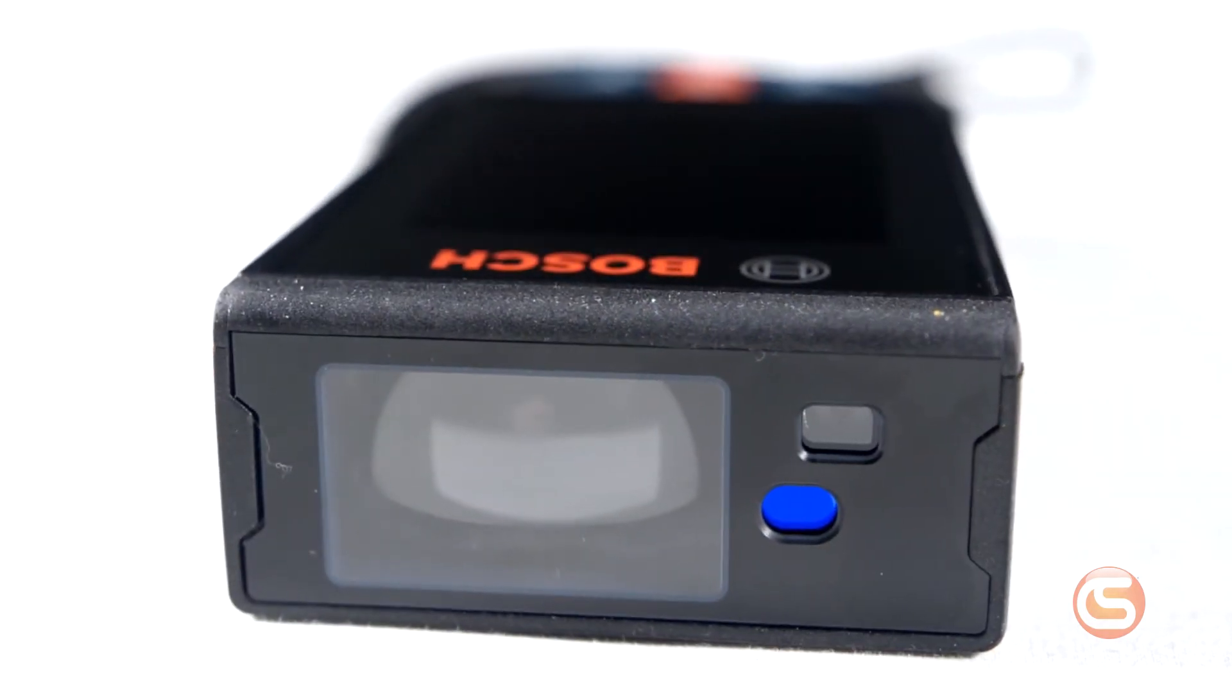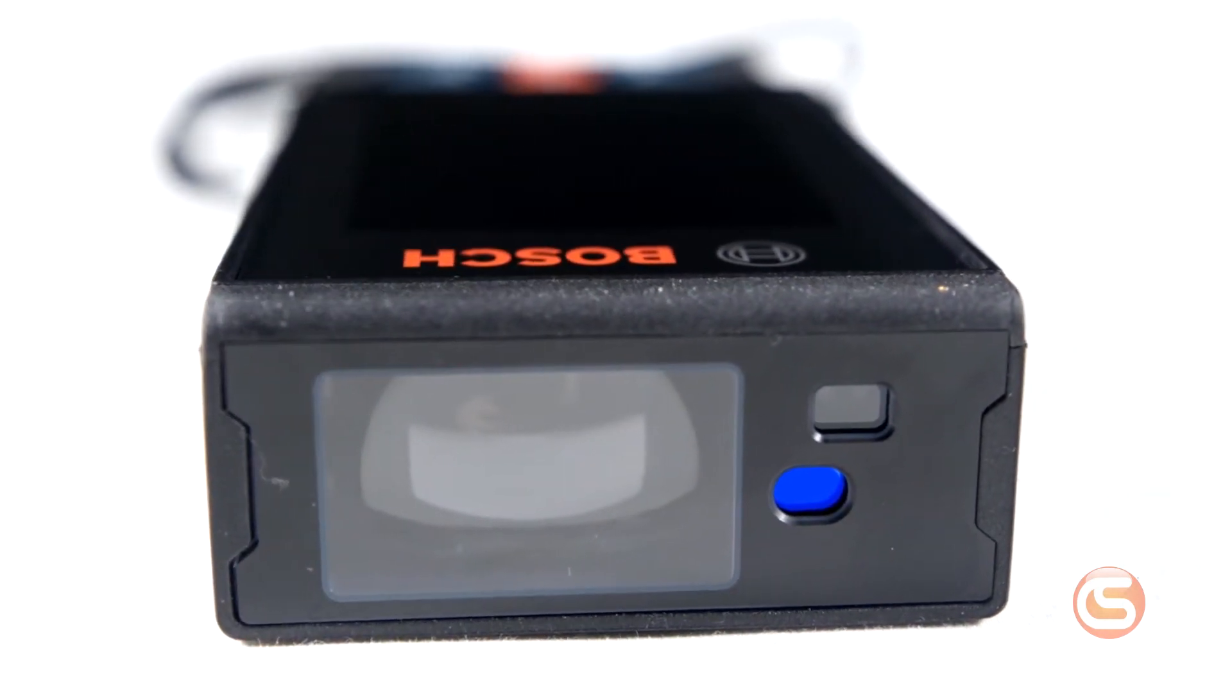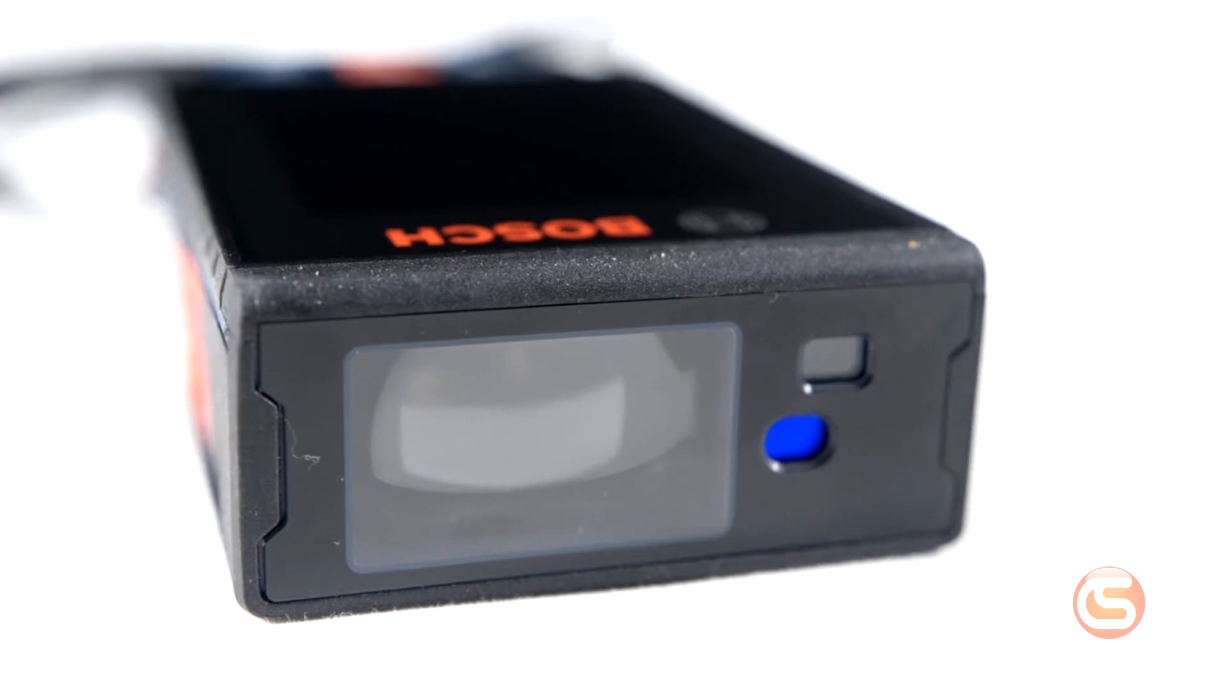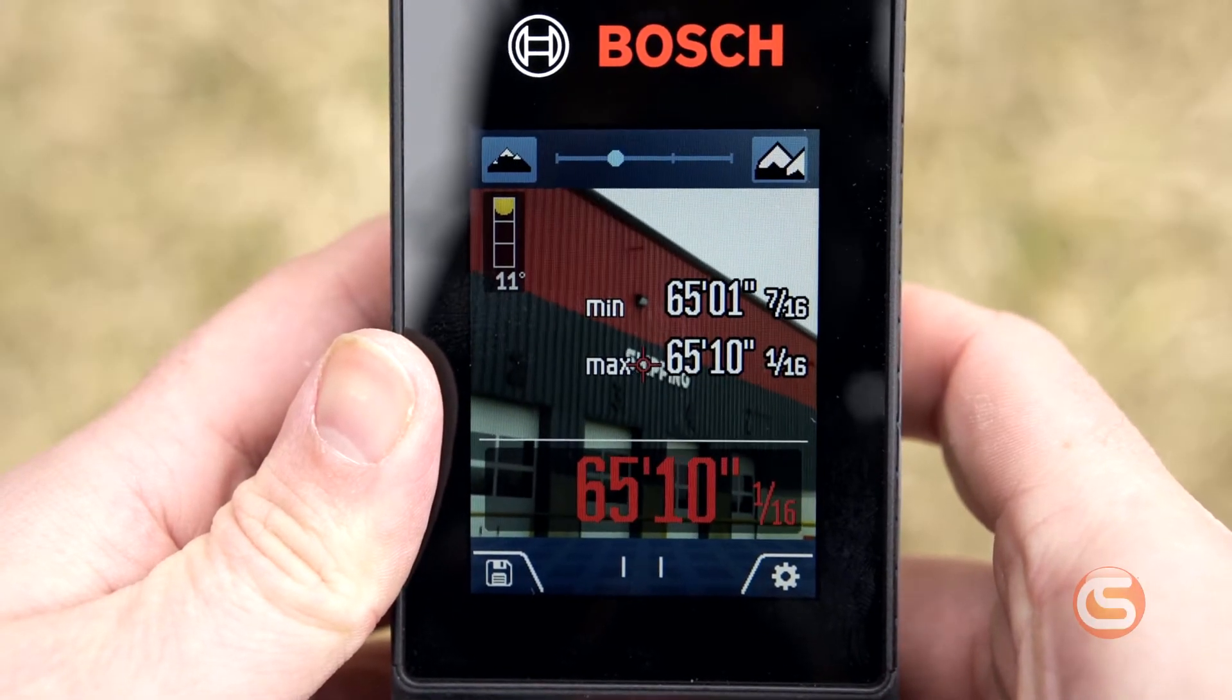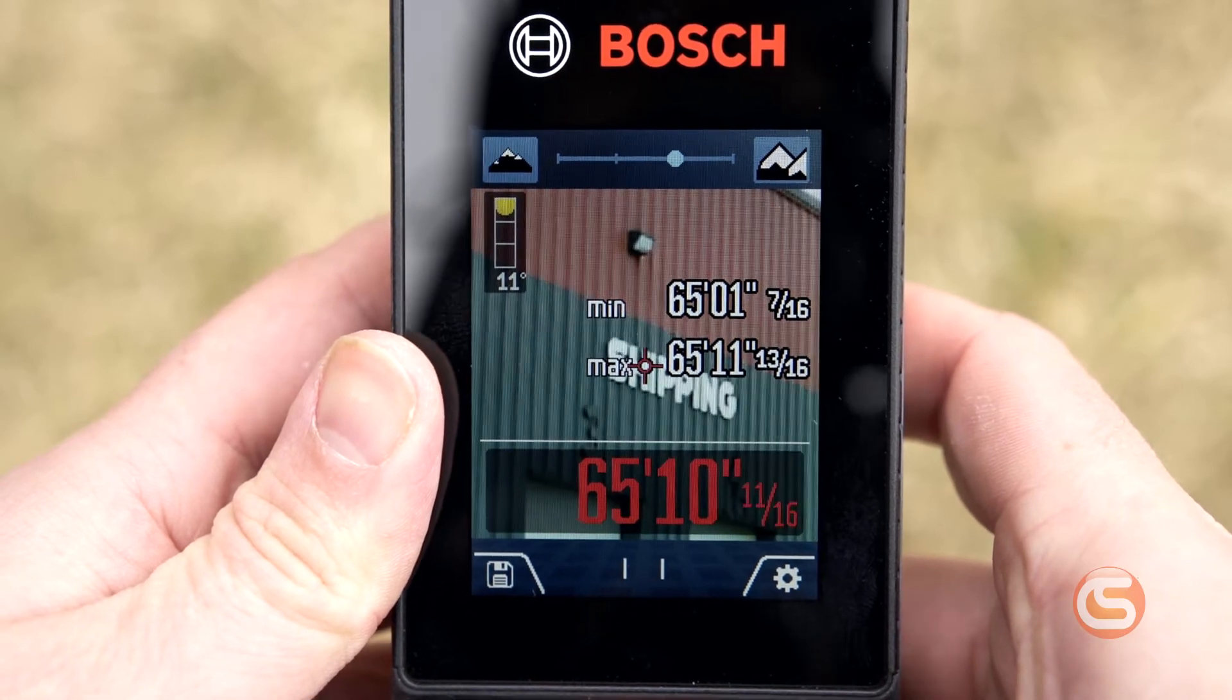You'll immediately notice the integrated target camera. This feature allows for faster, more accurate target acquisition, particularly outdoors. The camera has a three-step zoom, allowing you to simply line up the crosshair with your target and instantly see your measurement readings.